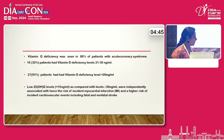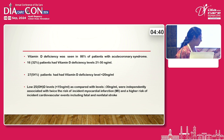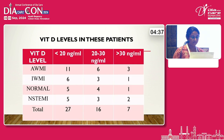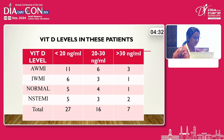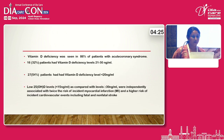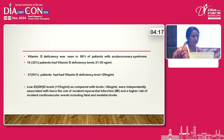Interpreting these results overall: vitamin D deficiency was seen in 86% of patients with acute coronary syndrome. Approximately 32% of patients had vitamin D levels in the 20–30 ng/mL range, and 54% had vitamin D levels less than 20 ng/mL.